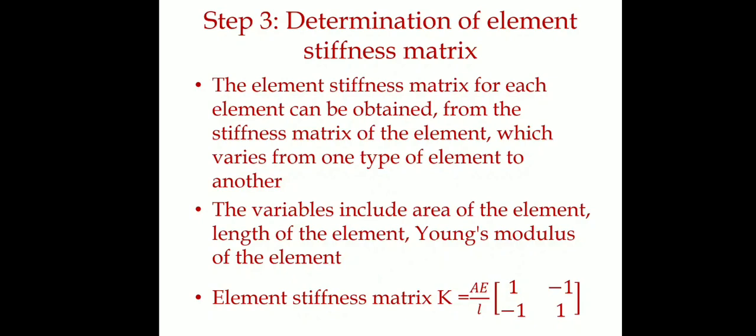The shape function is used to determine the element stiffness matrix. For a truss element, the stiffness matrix K is equal to AE over L, multiplied by the matrix [1, -1; -1, 1], which is a 2 by 2 matrix. The key variables are L (length), E (Young's modulus), and A (area of cross-section).